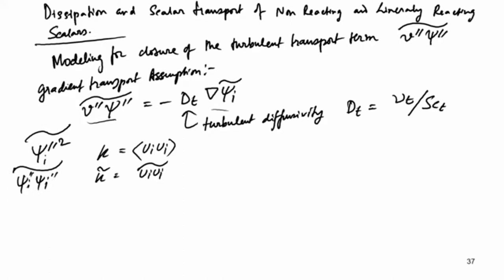We need to have an equation for that also. First we have an equation for xi_i prime — that is, a transport equation or evolution equation for xi_i prime.